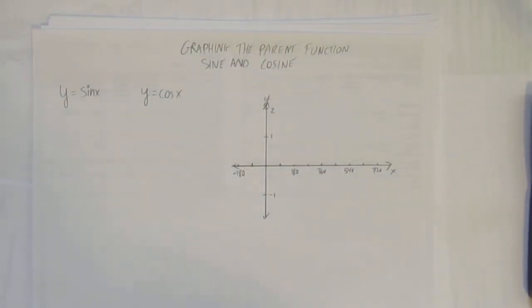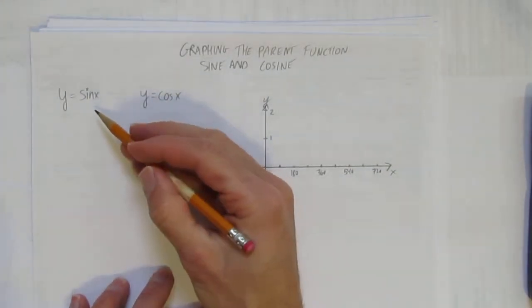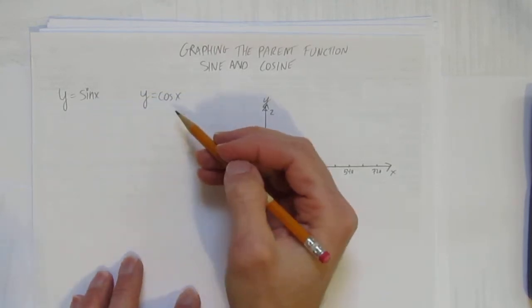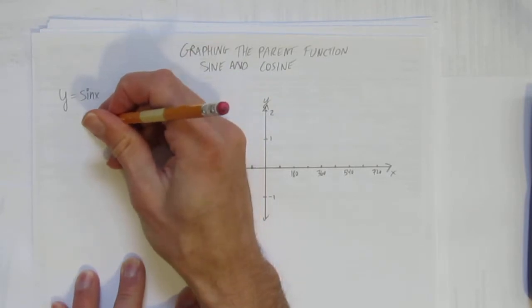In this video, we'll look at how to graph the parent function of both sine and cosine. So I wrote down y equals sine x. That's one of the sinusoidal parent functions. They're both sinusoidal. Sinusoidal just means a wave. Sine x is a wave.